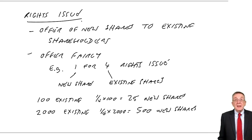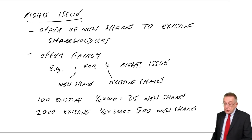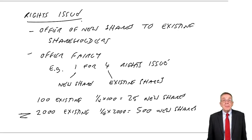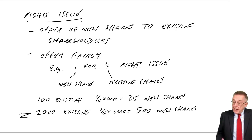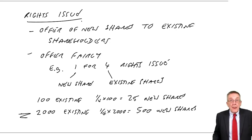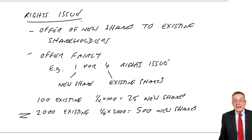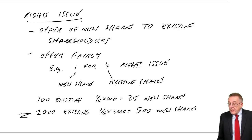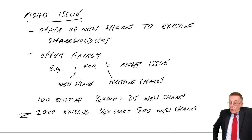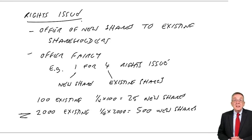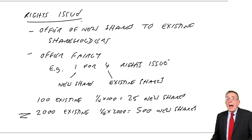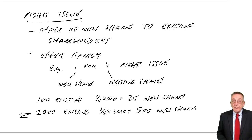You just get a letter from the company saying you're entitled to buy — in this case — 500 new shares. It's up to you whether you buy them or not. If you don't want them, you can throw the letter away, or in fact you can sell the letter to somebody else and they can buy the shares. You don't have to take all of them — you can buy any amount up to the maximum offered.